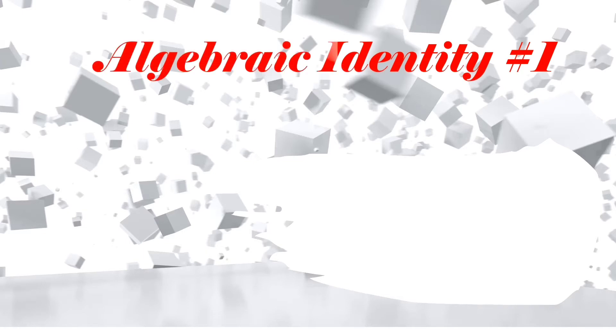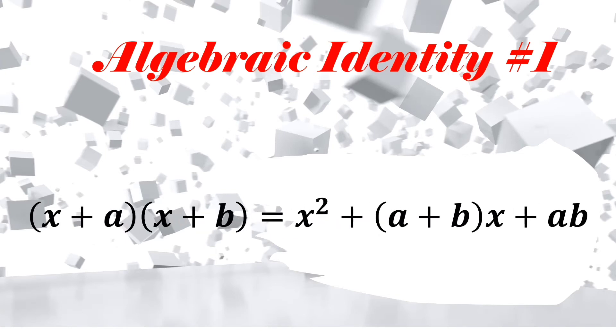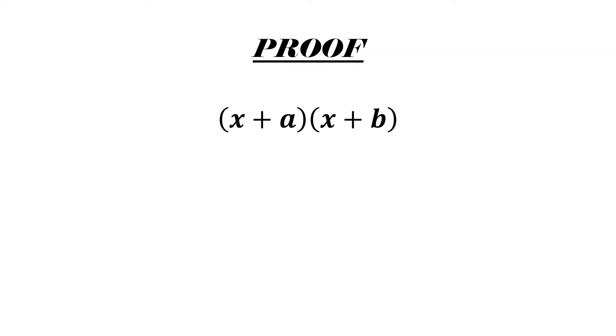Hello and welcome to Math Molecules. In this tutorial we would be learning the first of the algebraic identities, which is (x + a)(x + b) = x² + (a + b)x + ab. Let's see the proof of it.